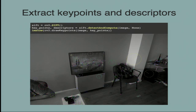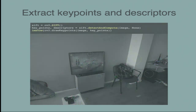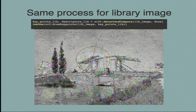OpenCV also has a function to represent key points and their orientation on the image. The colored circles are the key points recognized and they have an orientation. We perform the same process on the image in the library — we can imagine having several images in our library.